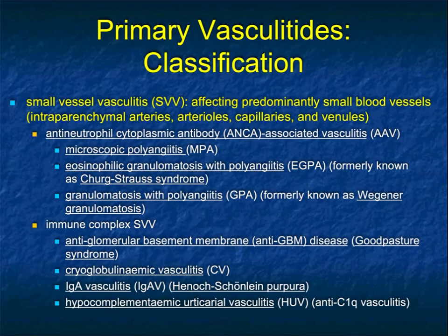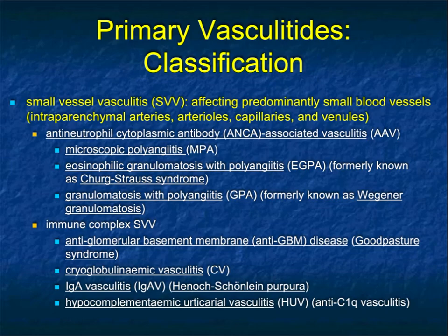Small vessel vasculitis affects small vessels — intraparenchymal arteries, arterioles, capillaries, and venules. There are many entities there, including ANCA-associated vasculitis, which includes granulomatosis with polyangiitis (formerly Wegener's), Churg-Strauss syndrome (now called eosinophilic granulomatosis with polyangiitis), and microscopic polyangiitis. We also talk about immune complex vasculitis, including IgA-related vasculitis.